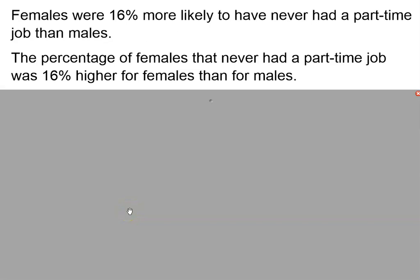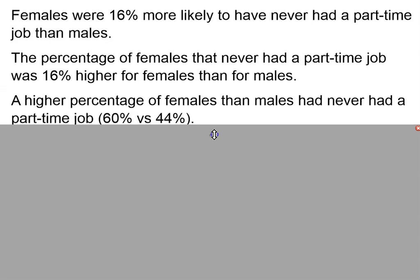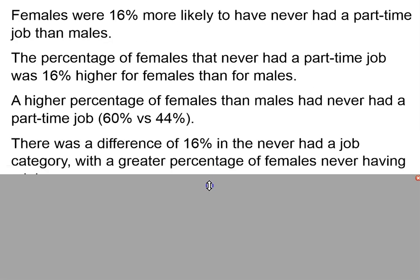In the summer jobs AP problem, students made statements like females were 16% more likely to have never had a part-time job than males, or the percentage of females that never had part-time jobs was 16% higher for females than for males. By that, they meant that a higher percentage of females than males had never had a part-time job, or that there was a difference of 16% in the never-had-a-job category with a greater percentage of females never having a job.